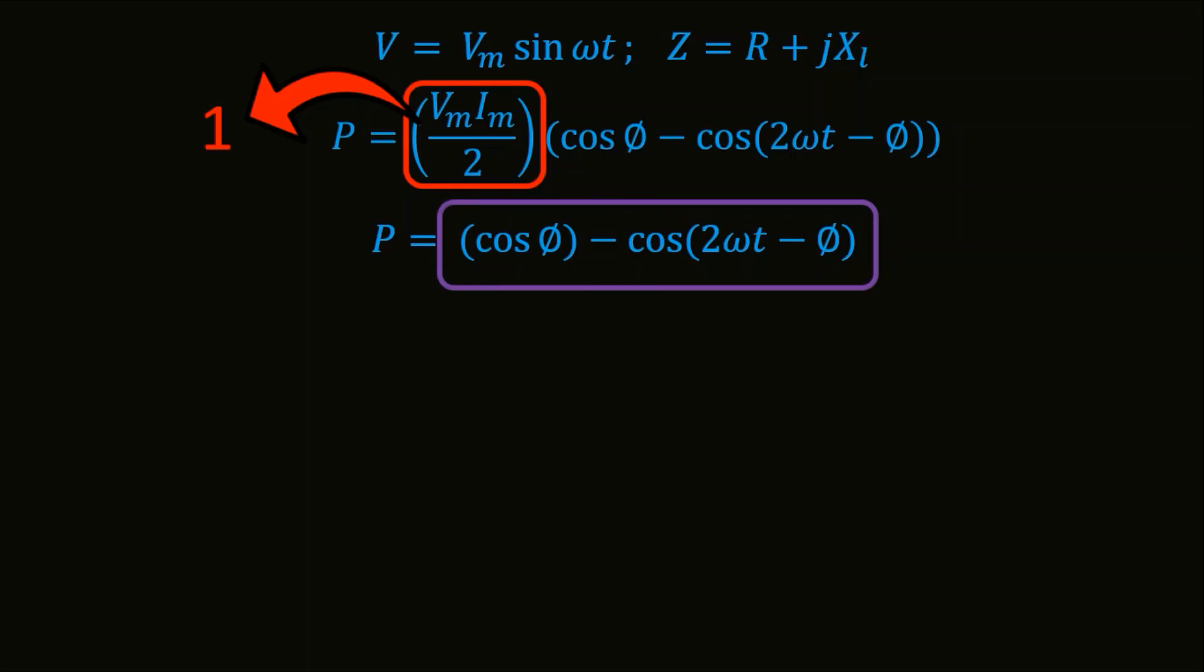Now, if we look at this whole function of power with one magnitude, this function here represents a varying waveform and this is a constant value which depends on impedance and this term decides the amount of reactive power in a circuit. Let us see how.